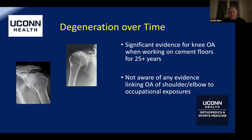Degeneration over time comes up more and more. I don't believe — and haven't found literature to support — that you can get osteoarthritis of the shoulder from repetitive trauma. There's significant evidence that working on cement floors for 25-plus years can cause osteoarthritis of the knee, but I'm not aware of any evidence linking OA of the shoulder or elbow to occupational exposures from repetitive trauma alone.